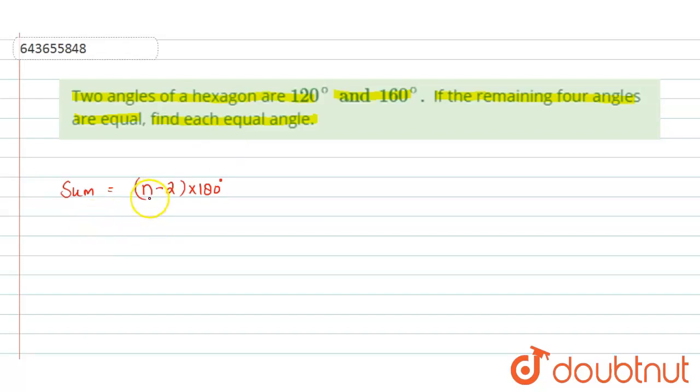So here n is nothing but the number of sides. So put the value of n. 6, we will get 6 minus 2 into 180 degrees, and this will give us 4 into 180 degrees, that is 720 degrees. So this is the sum of all interior angles in a hexagon: 720 degrees.